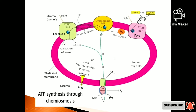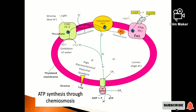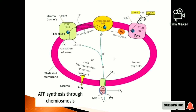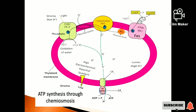Next to the Ferredoxin is the FNR enzyme — that is the NADP Reductase enzyme — and this enzyme is responsible for NADPH synthesis. Below the thylakoid membrane is the ATP synthase complex, which is the F0-F1 complex. Both chloroplasts and mitochondria have this F0-F1 complex. In chloroplasts, the F1 complex is designated with CF1.